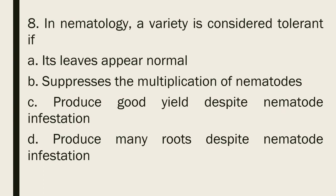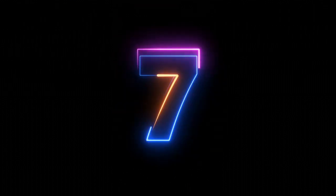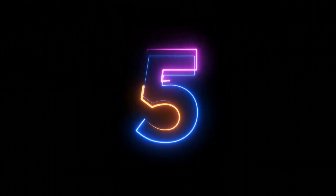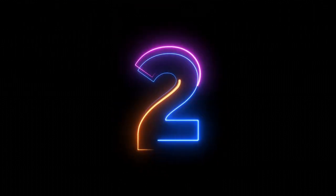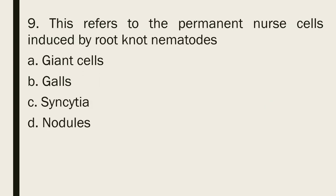Question 8: In nematology, a variety is considered tolerant if: a. Its leaves appear normal b. Suppresses the multiplication of nematodes c. Produces good yield despite nematode infestation d. It produces many roots despite nematode infestation. The correct answer is letter c, produces good yield despite nematode infestation.